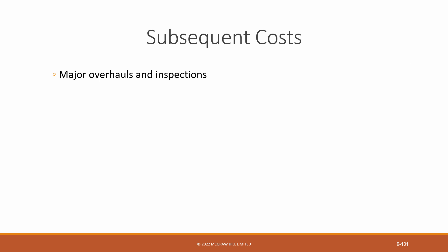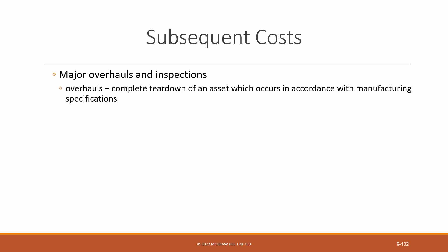Before we do an example of major overhauls and inspections, let's remind ourselves of the basics. An overhaul is when an asset, based on a recommendation from either a manufacturer or past experience, is taken apart, cleaned, inspected, and then put back together again. An inspection may be part of an overhaul, but it may also be a separate check on an asset, completed periodically, to make sure that the asset is in good working order.